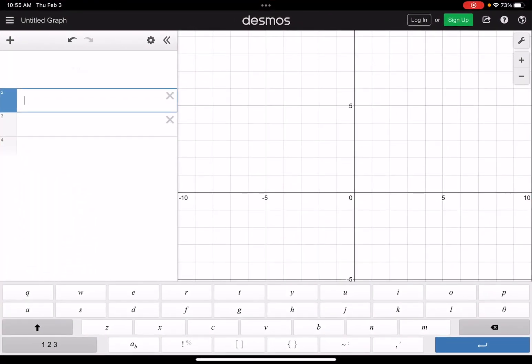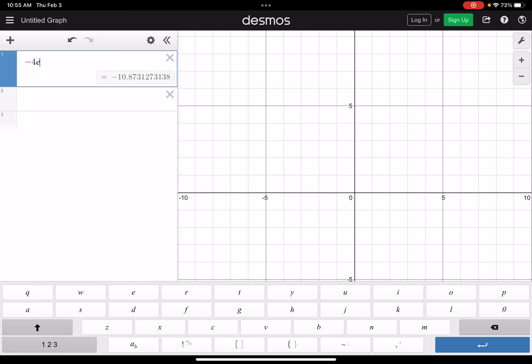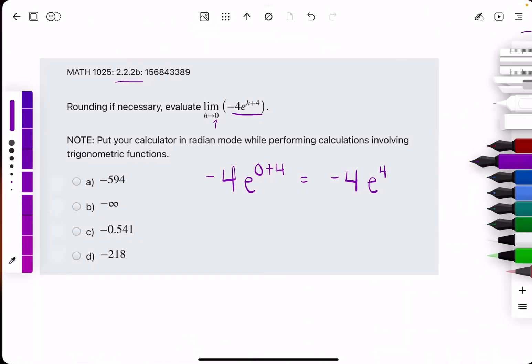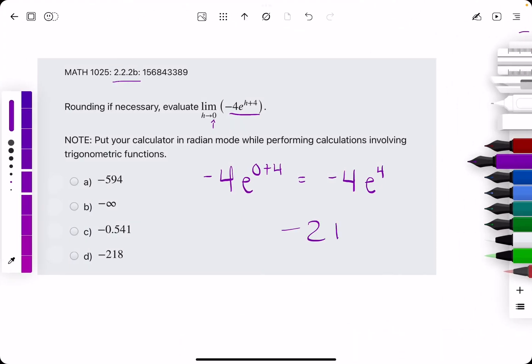I will do that in Desmos. Negative four e raised to the fourth, and we get negative 218.4 as our answer. So we look for the closest value to that, which is option D.